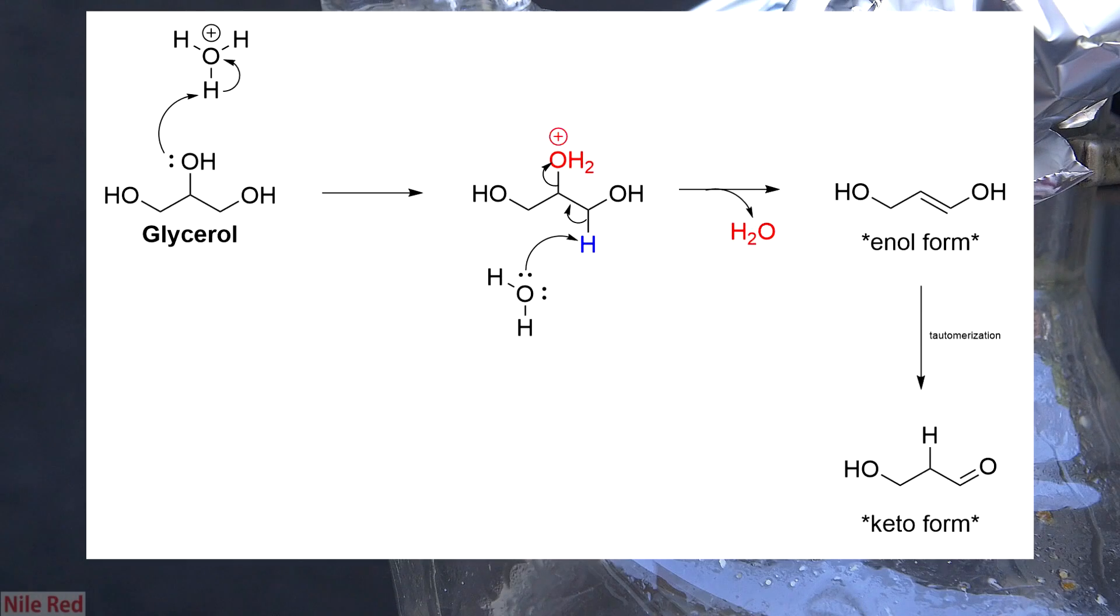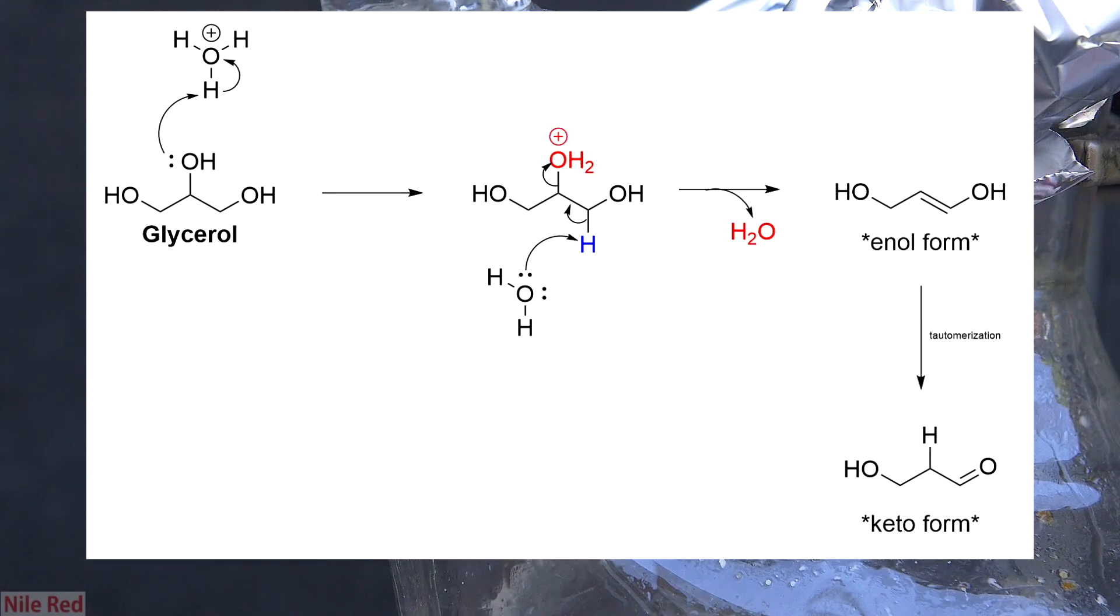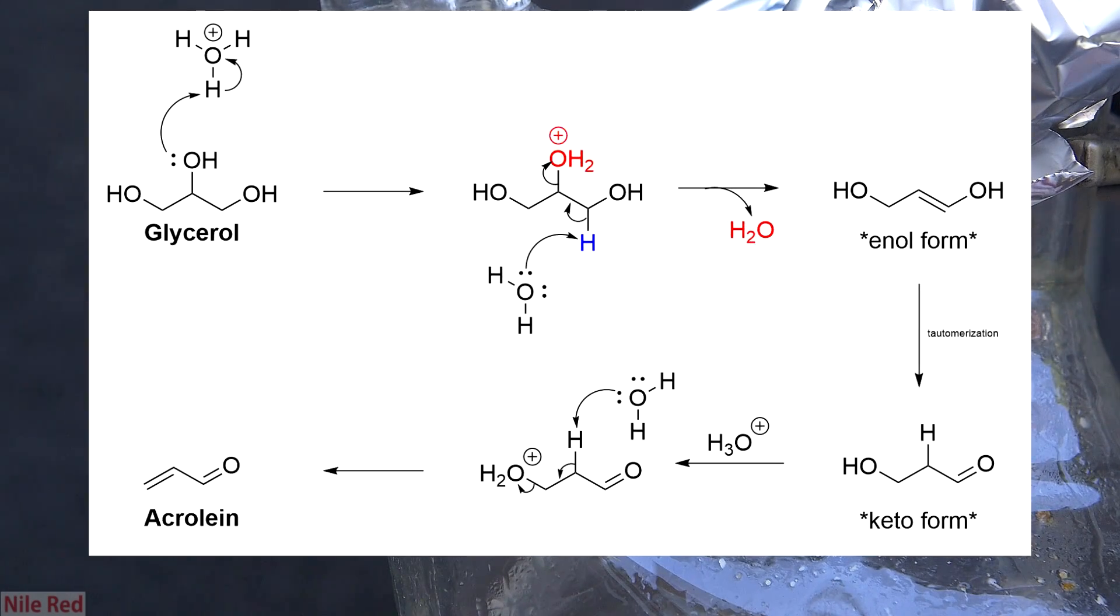This intermediate molecule then undergoes something called a keto-enol tautomerization. I don't really want to go into much detail on how this transition happens, but I will provide a link in the description for those who are interested in seeing the mechanism. Anyway, after it changes from the enol to the keto form, it can undergo its second dehydration reaction.